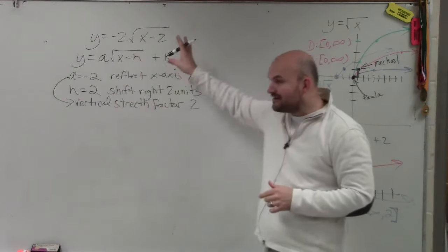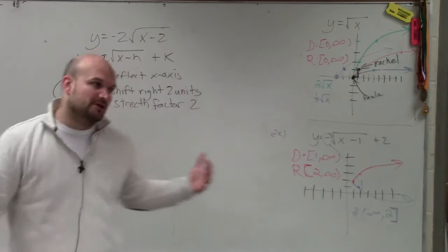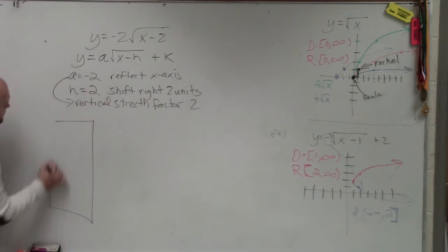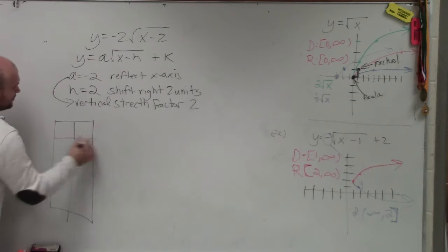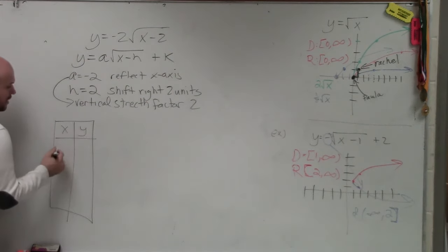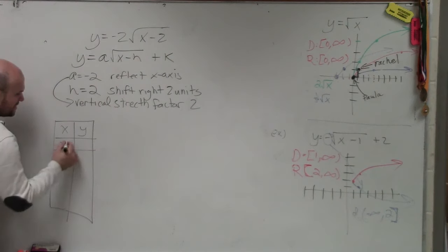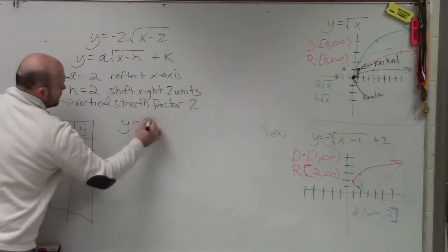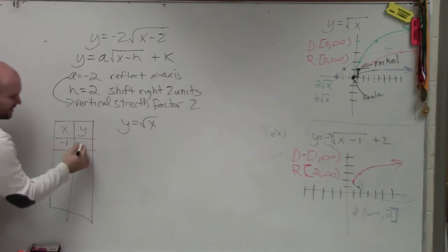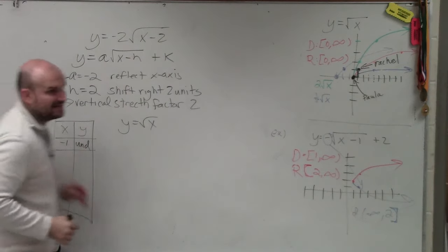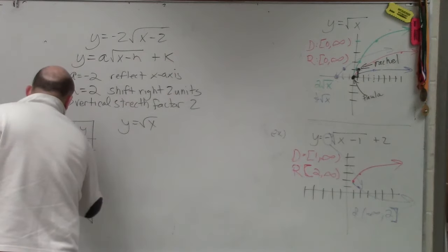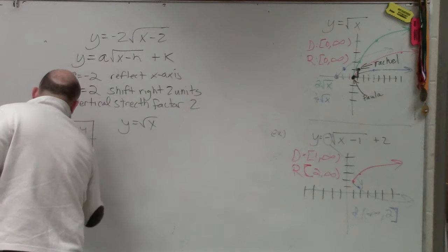So to graph this, the most important thing, in my opinion, is to know what the parent graph looks like. And the reason why I showed you guys this is when you're in the parent graph, you guys can create a table, or you can kind of take my word for it. We understand that you cannot use negative numbers into this function, right? You can't plug in a negative number. That is undefined, correct? OK, so we start picking numbers, 0, 1.